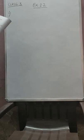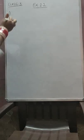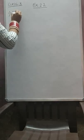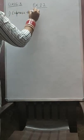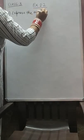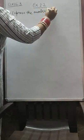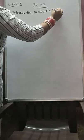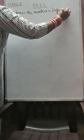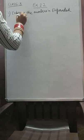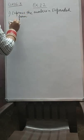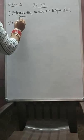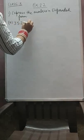What's there in the first question? Express the numbers in expanded form. Its A part is 3, 5, 2, 3.